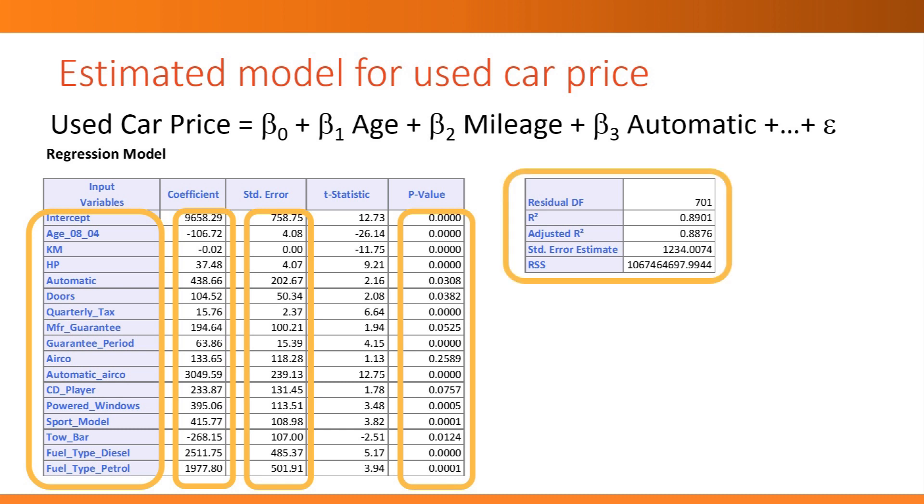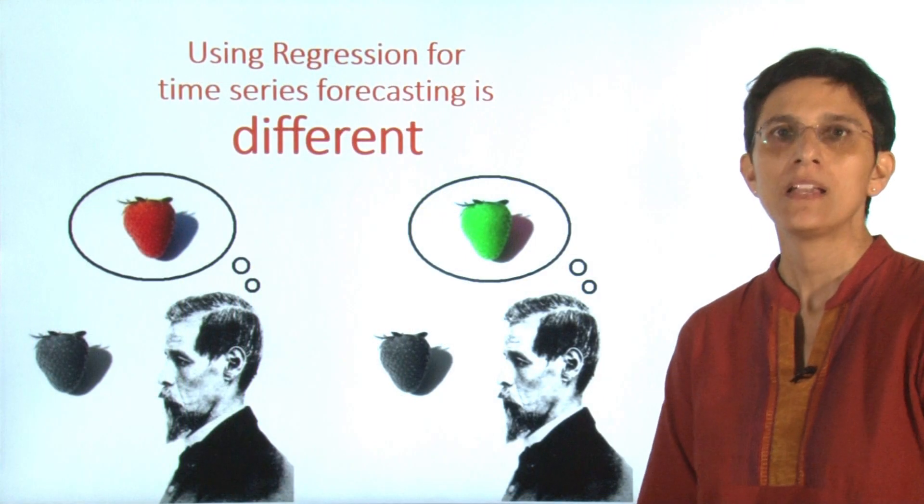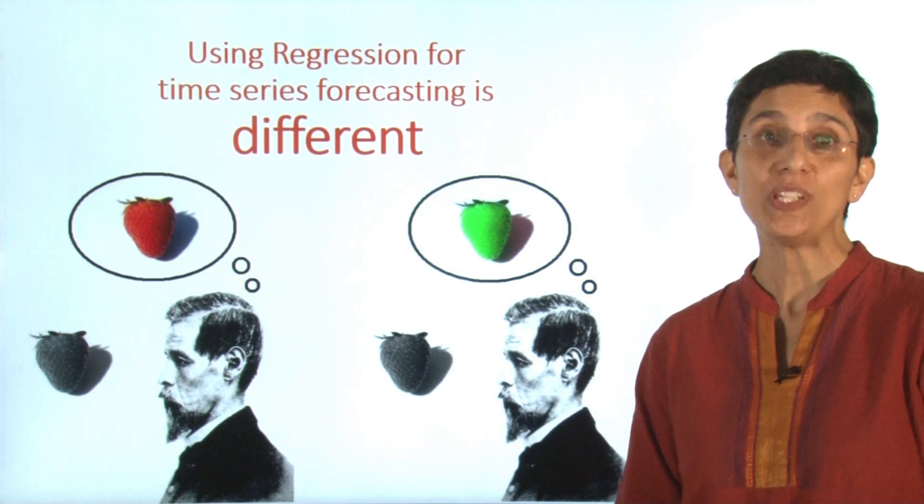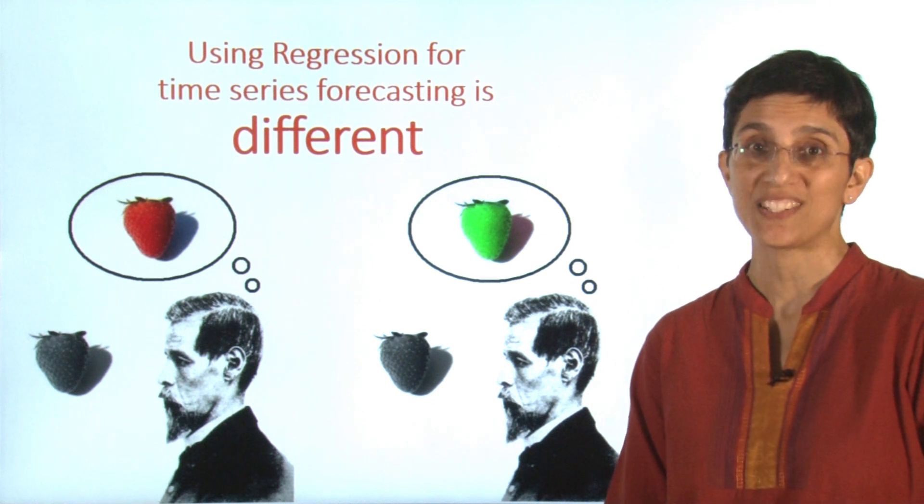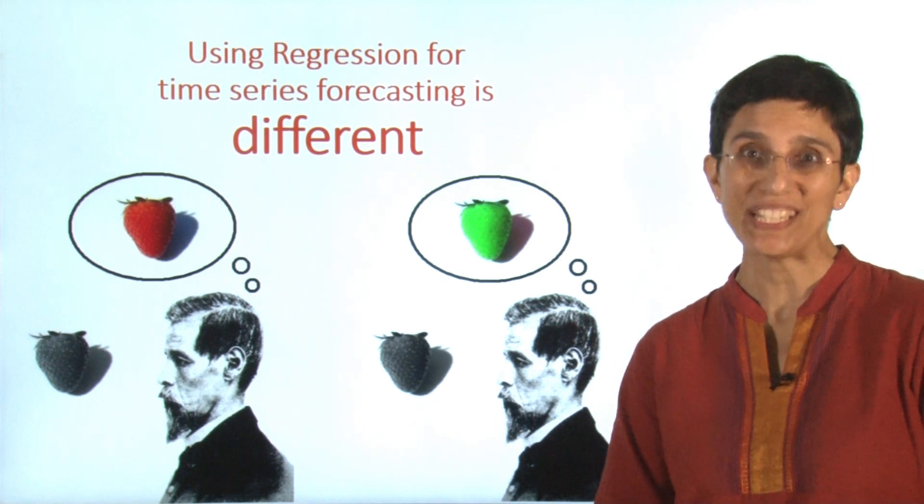We also typically get measures of overall relationship. The r-square, the standard error of estimate—these give us an idea of how much variability in prices is explained by the car features. However, when we're going to be using regression for time series forecasting, it's going to be a completely different story.